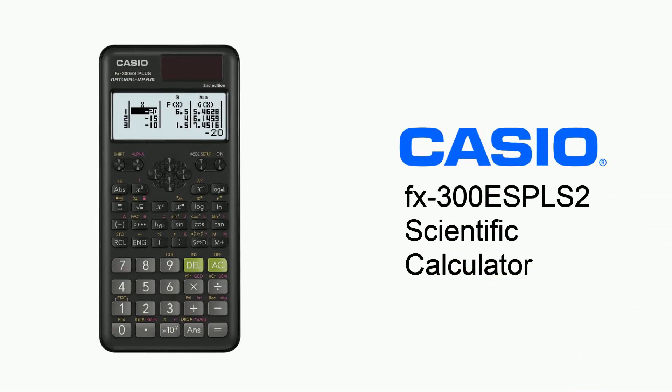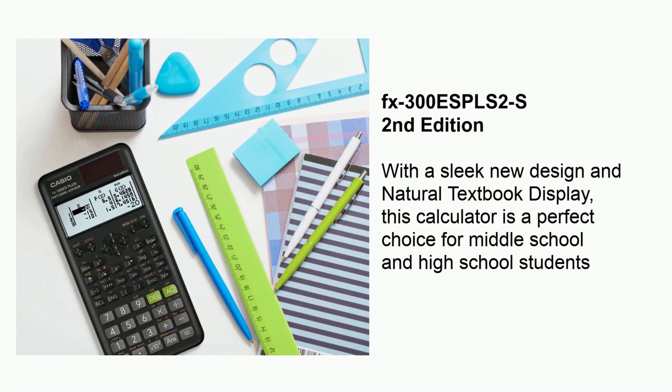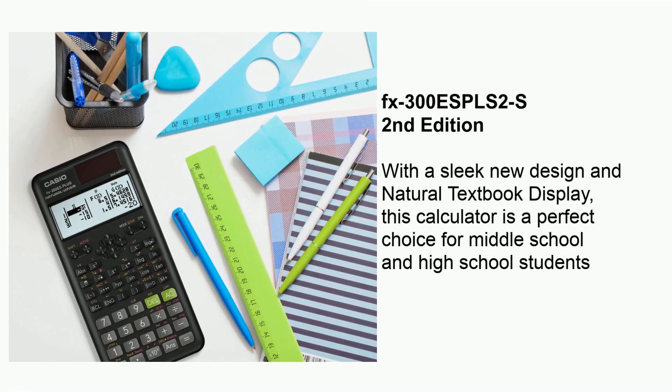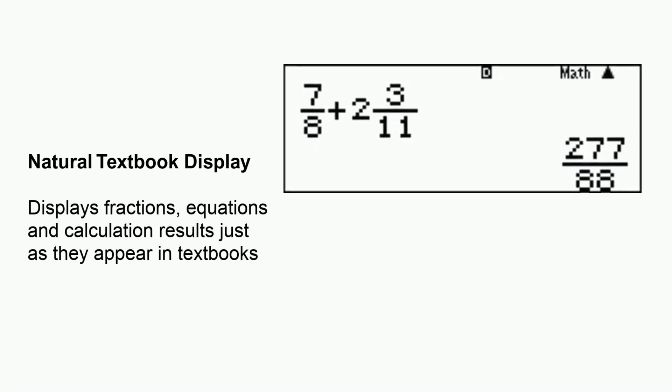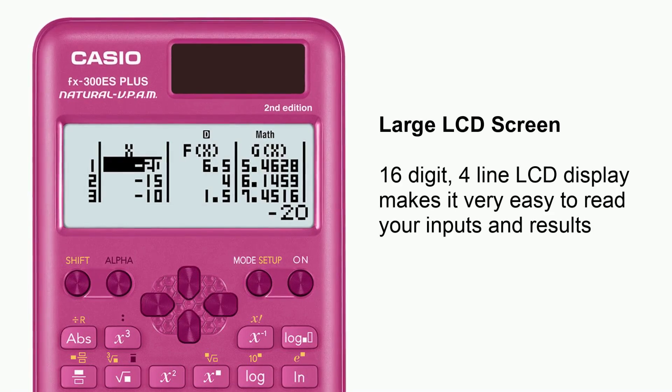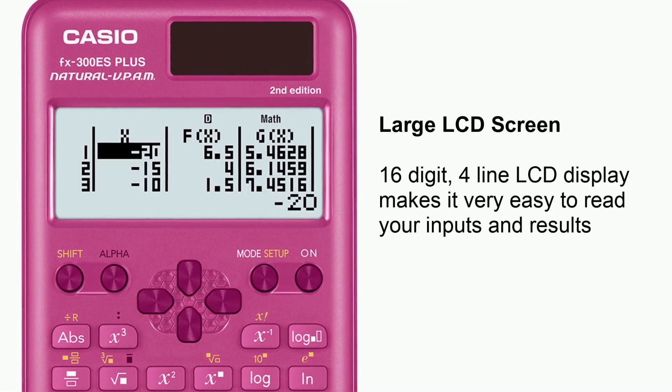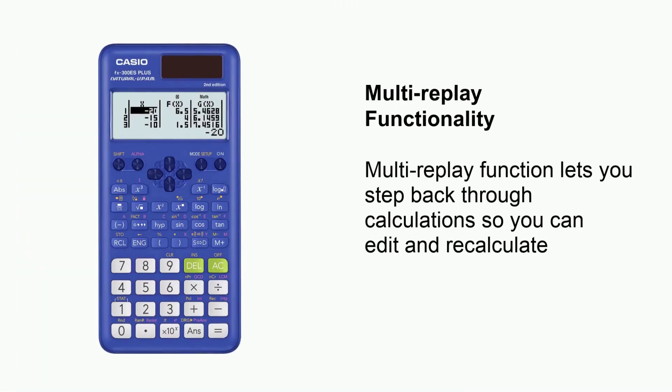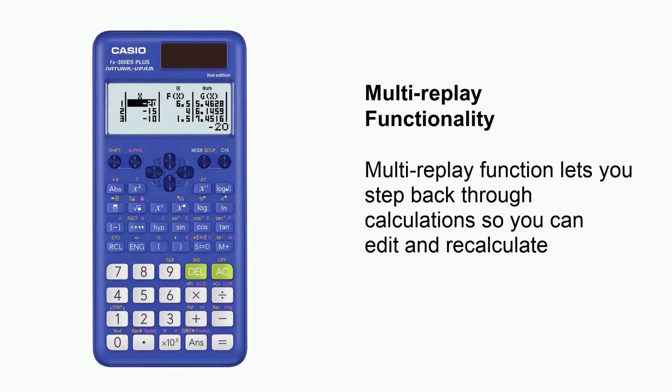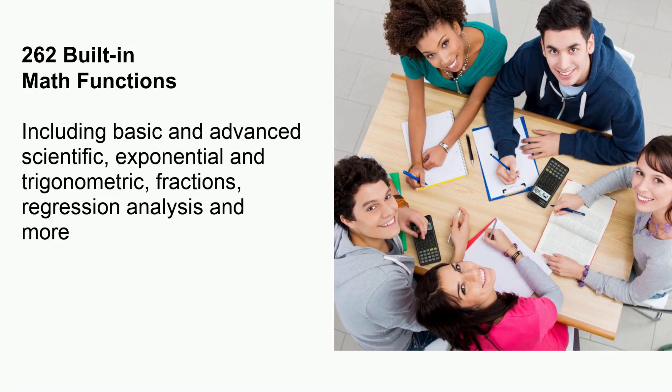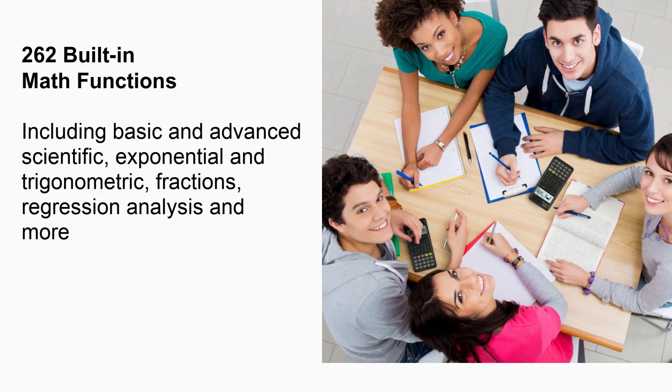The Casio FX-300ES Plus 2 SAIT transforms the way you handle calculations. Ever found yourself squinting at a calculator screen trying to make sense of a jumbled equation? This model solves that common headache with its natural textbook display, showing mathematical expressions exactly as they appear in your textbooks, a feature that makes double-checking your work infinitely easier. After putting it through its paces, I've discovered this calculator packs quite a punch. While it doesn't reach the 280 functions of its bigger sibling, the FX-115ES Plus 2, you still get access to more than 200 mathematical operations, which covers everything you need for high school and introductory college courses.